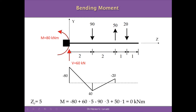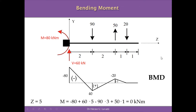The next point is z equal to 5, under the 20 kN load. The moment here is minus 80 plus 60×5 minus 90×3 plus 50×1, all around z equal to 5. The calculation gives a moment of zero at this point. We connect zero with minus 20, generating the last portion of the bending moment diagram. The diagram shows negative, positive, and negative regions.